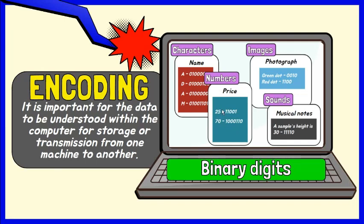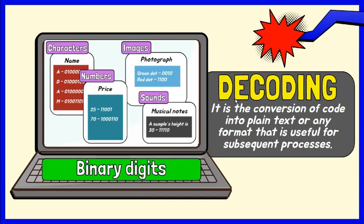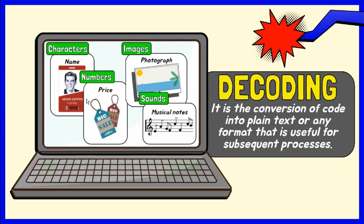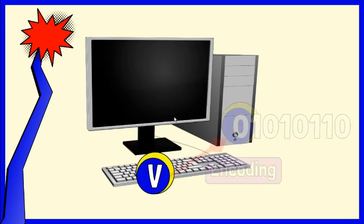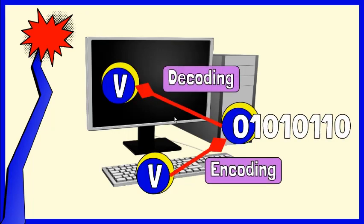Since a computer can only understand two values, zero and one, each data that you want to store or send across has to be converted into a sequence of zeros and ones. Decoding is the opposite process. This is the conversion of code into plain text or any format that is useful for subsequent processes. It converts encoded data communication transmissions and files to their original states. In short, when storing something in computers, the data will be encoded and then stored. And when reading it back, it will be decoded and then displayed to you.